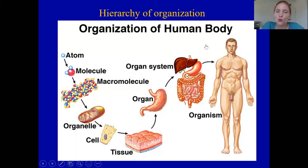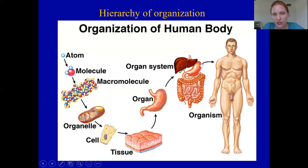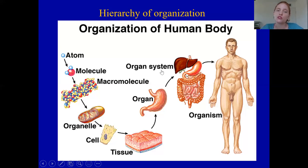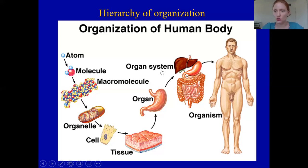If you collect several different organs and give them a general function, you get an organ system. A group of organs with a particular function is an organ system. For example, the stomach is part of the digestive system. Let's be clear on the difference: an organ means one structure — the stomach is one structure. An organ system means more than one organ. So on a quiz, if I ask you to name an organ, don't give me an organ system. The digestive system and cardiovascular system are systems — they include more than one organ.